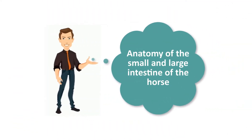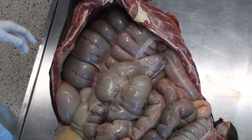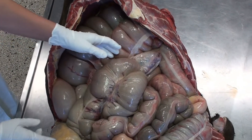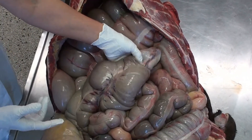Hello everyone and welcome back to another anatomy tutorial where we are going to be talking about the small and large intestine of the horse. After we open the abdomen through the linea alba, the first structure we can see is the sacrum.